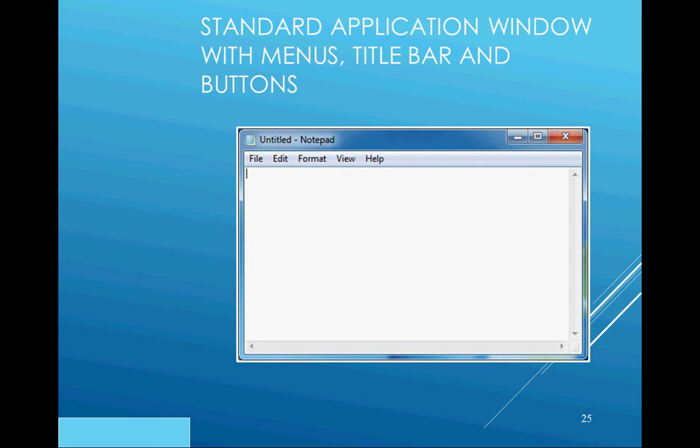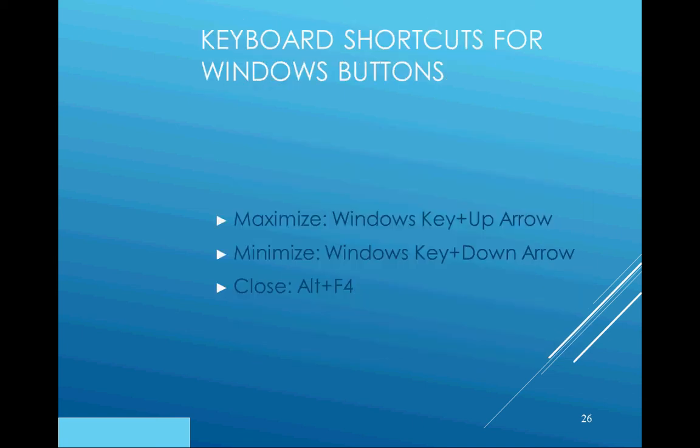There are keyboard shortcuts you can use in Windows. Windows key + Up Arrow maximizes your window. Windows key + Down Arrow minimizes your window. Alt + F4 closes a window — that one has been around for a long time.